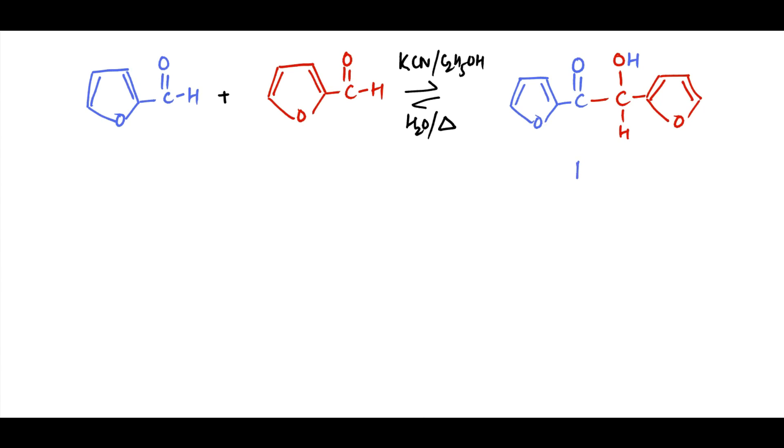As an example, consider the benzoin condensation of 2-furfuraldehyde, also called furfural. In the presence of cyanide catalyst, the donor part will retain carbonyl group, whereas in the acceptor part carbonyl is changed to hydroxyl group. This product is called furroin.